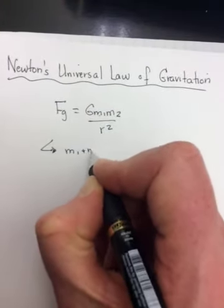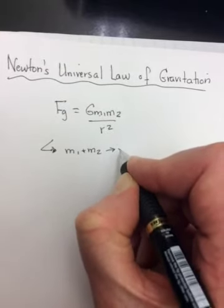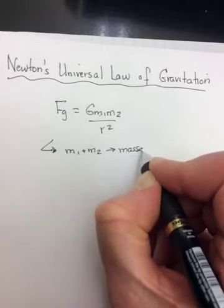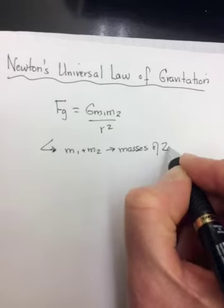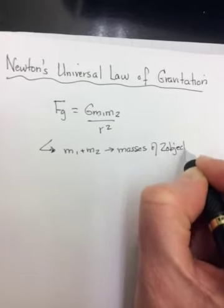So m₁ and m₂ are the masses of the two objects, and of course that's measured in kilograms.